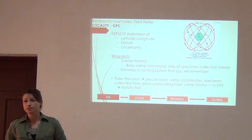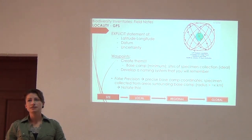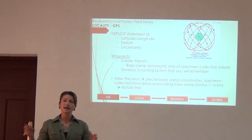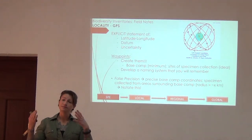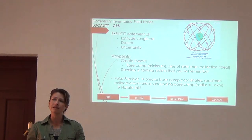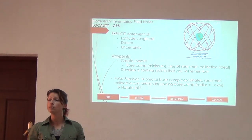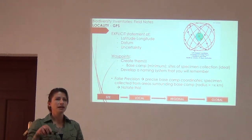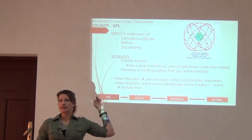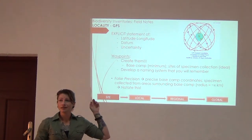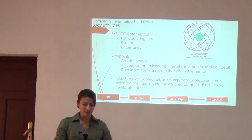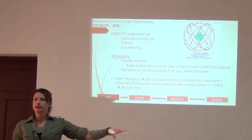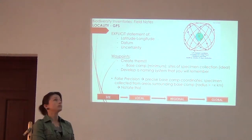False precision is another point to consider. Many of us — especially birders and herpers — have a centralized base camp. We get as accurate coordinates as possible for that base camp, but then we might wander two to five kilometers or more searching for specimens. If you don't actually collect your specimen at the base camp, those base camp coordinates aren't completely accurate. State that. Say our base camp was at X location, but really I was 2.5 kilometers north by northwest away from there.